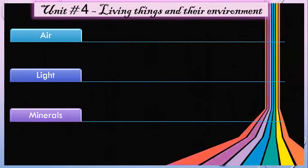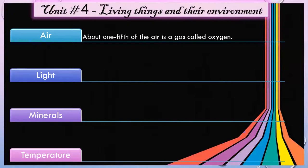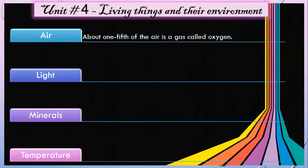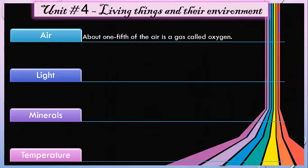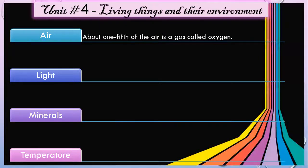Air: about one-fifth of the air is a gas called oxygen. Living things take oxygen out of the air when they breathe. Breathing helps to produce energy for the body. A very small amount of the air is carbon dioxide, which is added to the air by burning wood and coal and also by the breathing of animals.